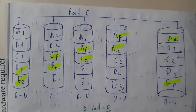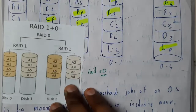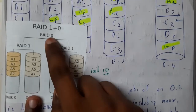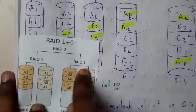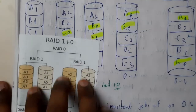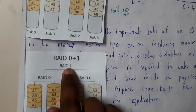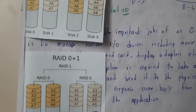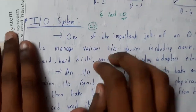RAID 10 is a combination of RAID 0 and RAID 1. RAID 10 uses the striping of RAID 0 and the mirroring of RAID 1 together. The data is first striped across disks as in RAID 0, and then each stripe is mirrored as in RAID 1. This way RAID 10 increases the performance of your system while also providing redundancy.